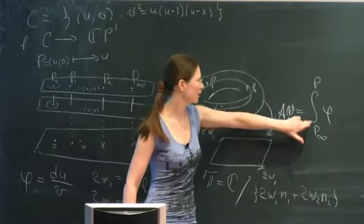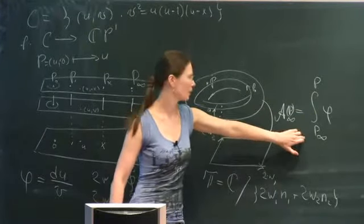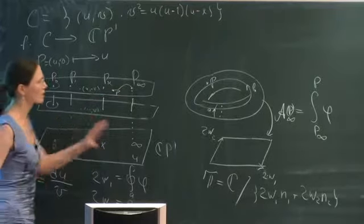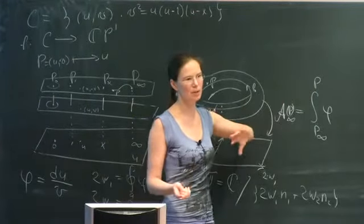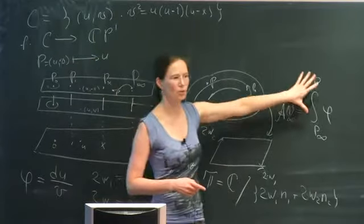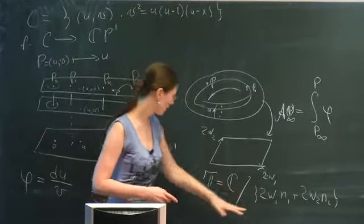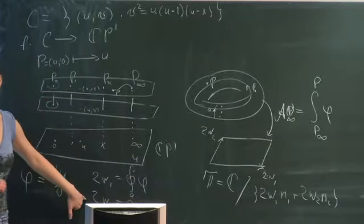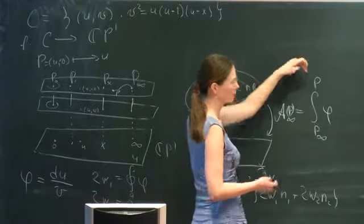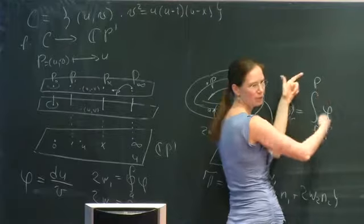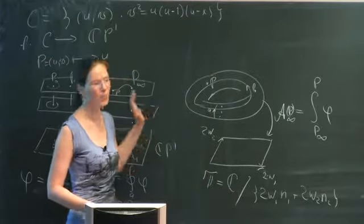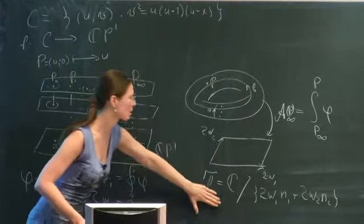On the torus there are two non-trivial cycles, called A and B. The vectors 2ω₁ and 2ω₂ are the integrals over the A-cycle and B-cycle of the differential φ. This makes the Abel map well-defined: it does not depend on the contour chosen between the ramification point at infinity and p, because two such contours differ by a closed contour which is a linear combination of the two non-trivial cycles A and B.